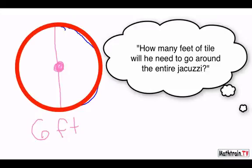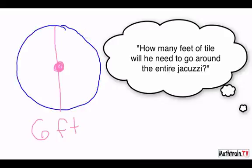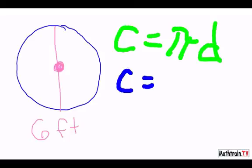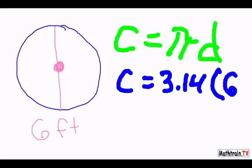So let's write out the equation for this. C circumference equals pi D. So let's plug in our numbers. C equals 3.14 times D, which equals 6 feet.